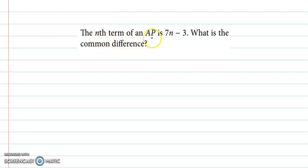The nth term of an AP is 7n minus 3. What is the common difference? So here we have tn value as 7n minus 3. Now we can find common difference easily by subtracting the second and the first term.